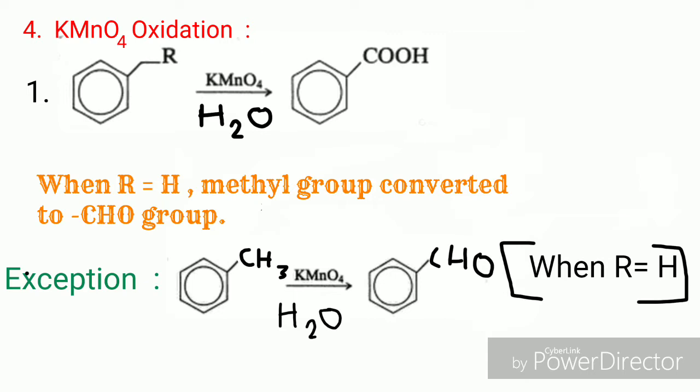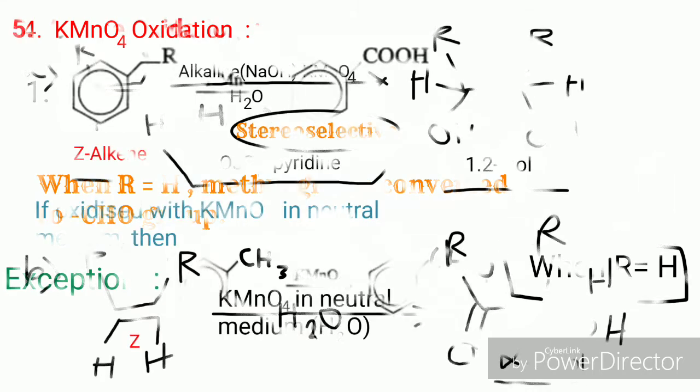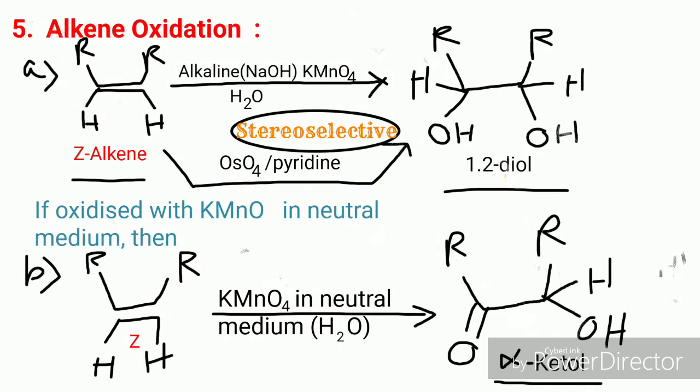In the next case, any alkyl substituent on the benzene ring is converted to benzoic acid by KMnO₄ and water treatment. But when the alkyl group is a methyl group, it is converted to benzaldehyde, not benzoic acid. This is an exception you should remember.